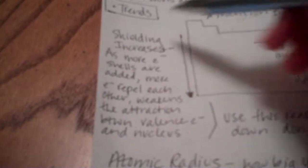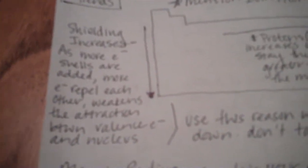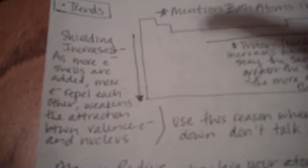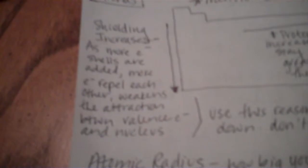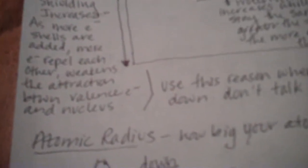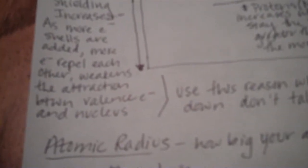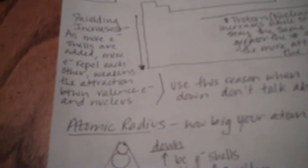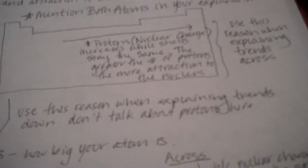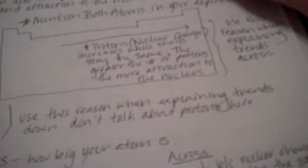Going down a group, this is the explanation you want to use. You want to talk about shielding. So, shielding, just imagine like you put something really large in between like the nucleus and the outer valence electrons, like an elephant. So, if you put something large in between, those inner electrons are going to block or they're going to shield the outer electrons. When those outer electrons are shielded, the attraction is going to decrease. When the attraction decreases, it becomes larger and easy to remove electrons, that kind of thing. So, use this reason when explaining trends going down. Do not, at this point, talk about protons.